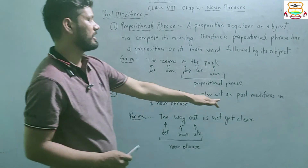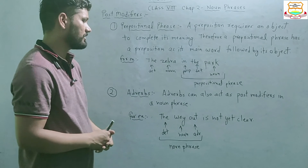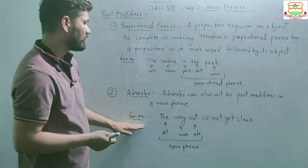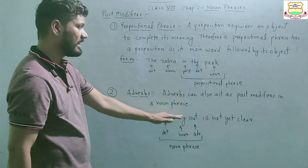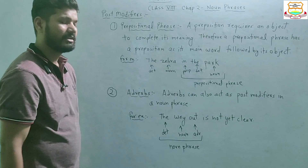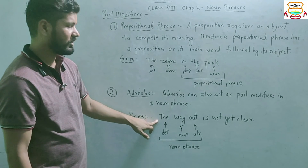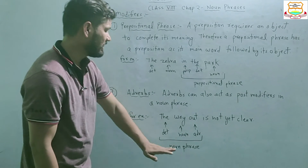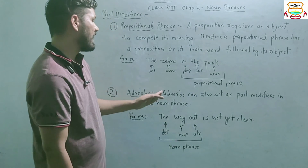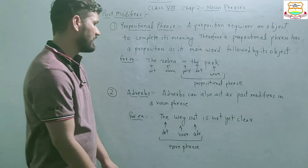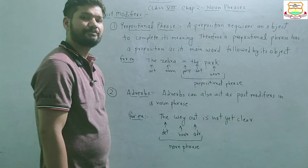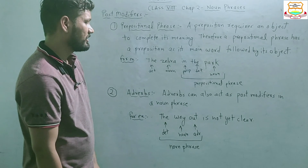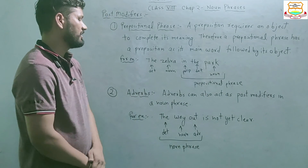The second type of post-modifier is adverbs. Adverbs can also act as post-modifiers in a noun phrase, like in 'the way out is not yet clear'. Here, 'the' is a determiner acting as a pre-modifier, 'way' is the noun — the main word — and 'out' is an adverb acting as the post-modifier. So adverbs can also act as post-modifiers in a noun phrase.